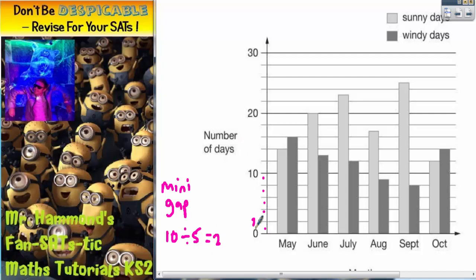So it goes 0, 2, 4, 6, 8, 10, 12, 14, 16, 18, 20, 22, 24, 26, 28, 30. And we've got to bear that in mind later on.